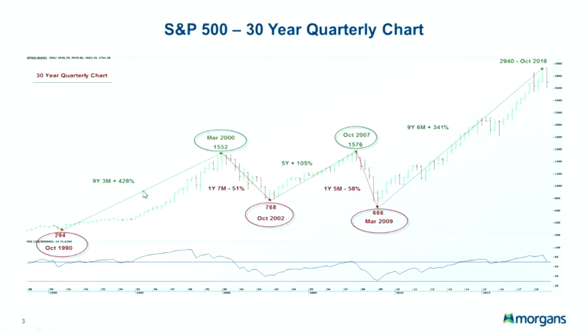On the first bull market we added 428%. On the second bull market leading to the GFC top, we added 105%. The current bull market has advanced 341%. What we can also see is that during the two prior bull markets, on average the market declined 51 to 58%, roughly 55%. The average length of the bull market is around seven years and the average bear market is two years. Most major market tops and bottoms occurred in the months of October and March.